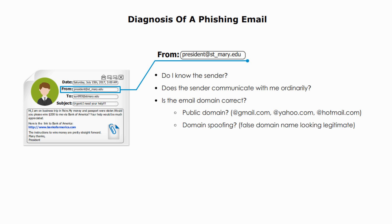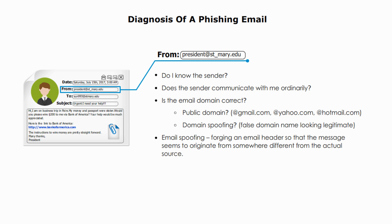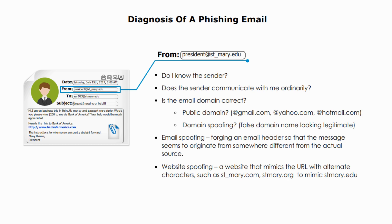Sometimes email domains can be faked to fool victims. One method is called email spoofing, which means forging the email header so that the message seems to originate from somewhere different from the actual source. The second method is website spoofing. Hackers can have a website that mimics the URL with alternate characters, like st-merry.com or st-merry.org, to mimic st-merry.edu, which is the real domain. Domain spoofing can be tricky — without checking other parts of the email, you can easily fall into the trap.